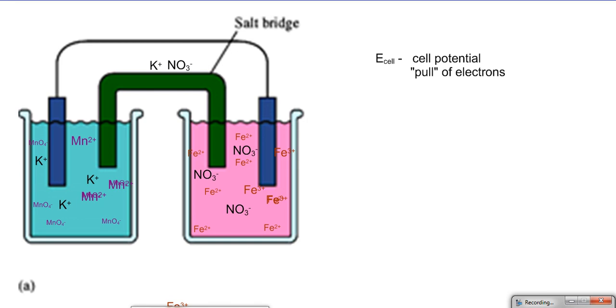Cell potential is a measure of electromotive force. It's a pull of electrons as they travel from the anode to the cathode, and it's measured in volts. So if we were to put a voltmeter on the wire between the anode and the cathode, it would register the amount of volts.